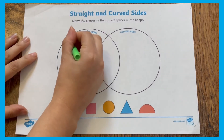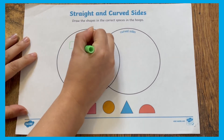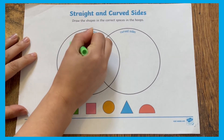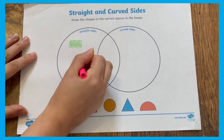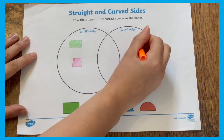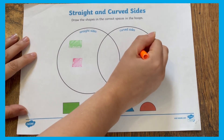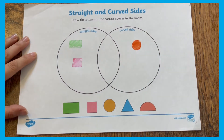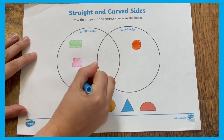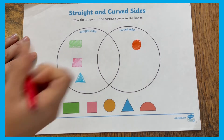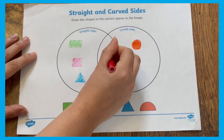This first worksheet asks the children to draw the shapes into the correct spaces in the hoops. Does it fit in the straight side, the curved side, or does it go in both?